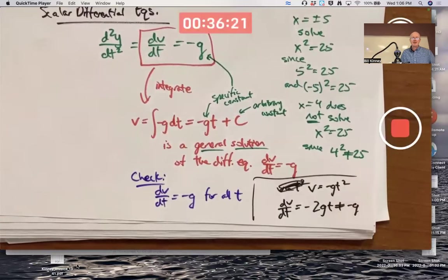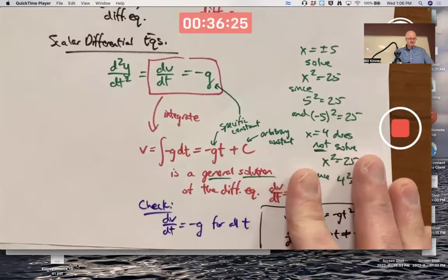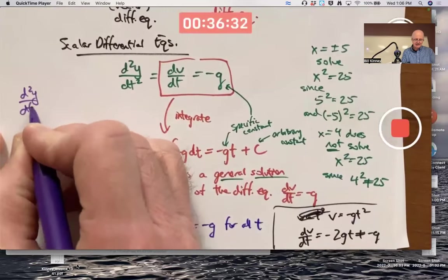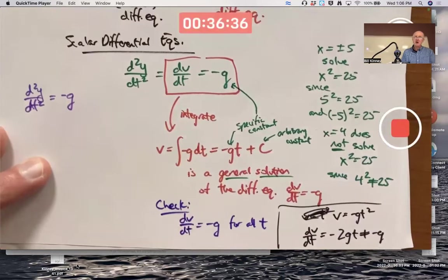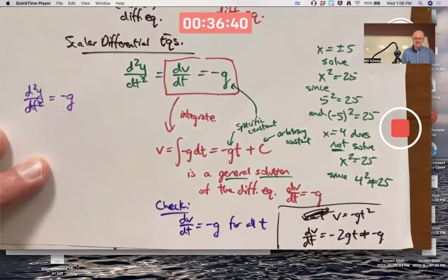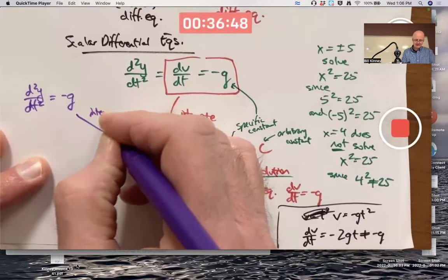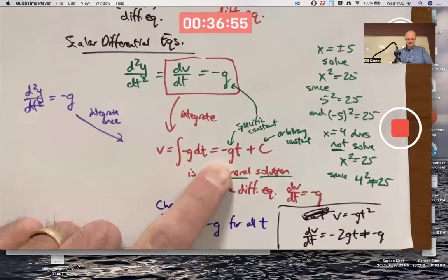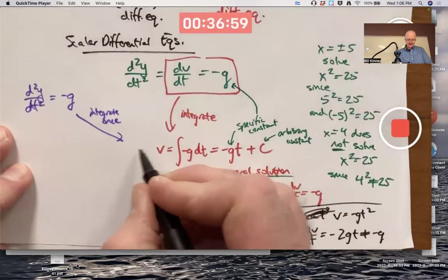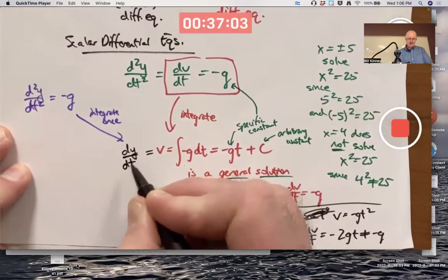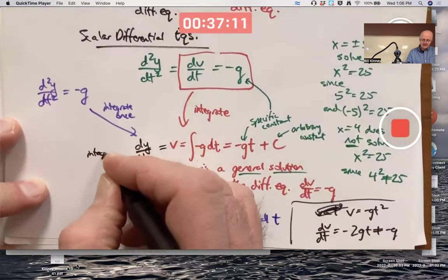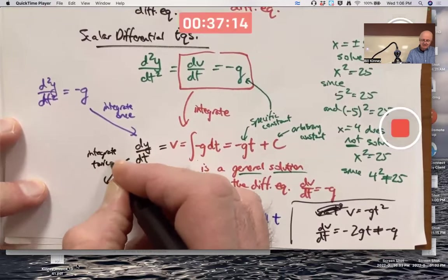How about can I solve the second order equation? The second derivative of Y with respect to T equaling negative G. Sure. Integrate twice. We already integrated once and got that. I could think of V as dY/dT. And then we integrate a second time.